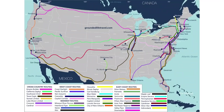Worth noting: most trains east of Chicago are Viewliner trains, and most trains west of Chicago are Superliner trains. There are a few exceptions, but that's generally the rule. The roomettes and rooms look different and have different features between Viewliner and Superliner, so check the relevant reviews on the channel to understand those differences before you book.